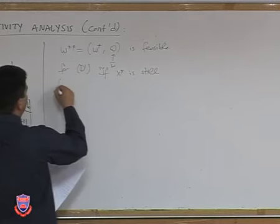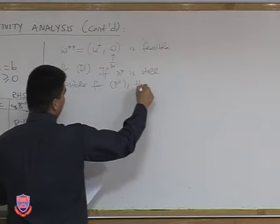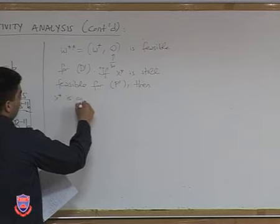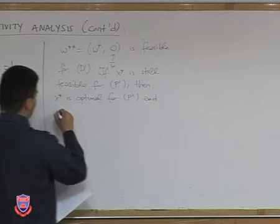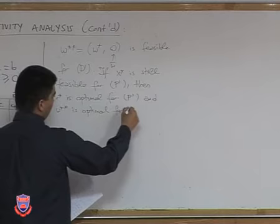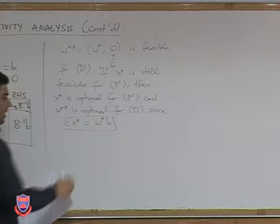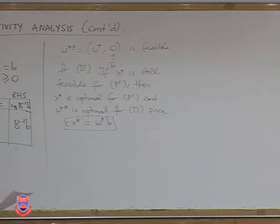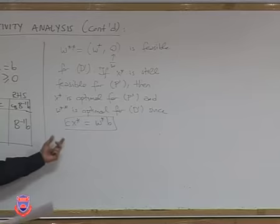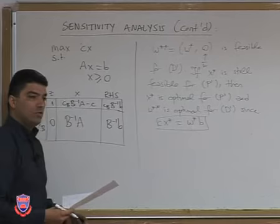If x* is still feasible for the new primal problem P', then x* is optimal for P' and W double star is optimal for the new dual problem, because Cx* equals W*b, so I have a pair of feasible solutions with the same objective function values — by strong duality they are optimal. If x* is not feasible for P', the optimal solution changes.